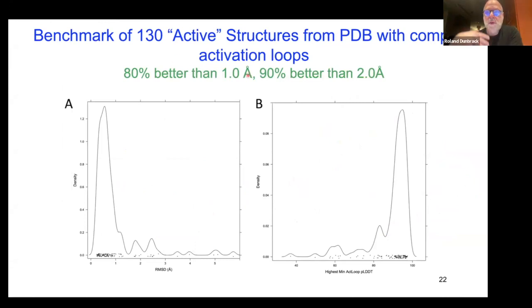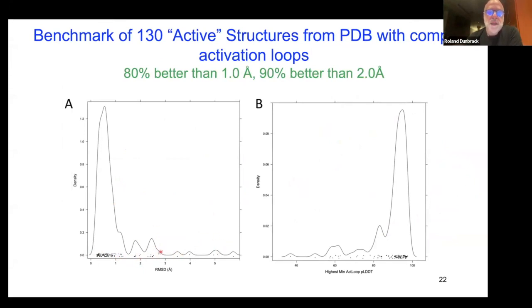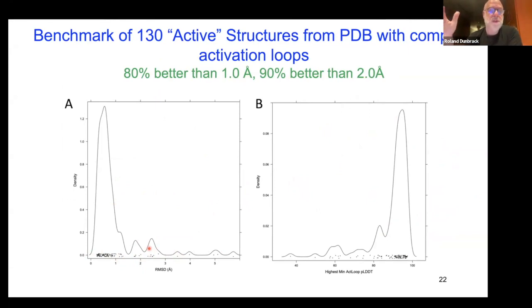Of the 130 kinases with complete activation loops in the PDB in active form, 80% of our AlphaFold models achieve better than 1 Å RMSD to the known structure. For a few outliers with higher RMSD, we believe the PDB structure itself may not be fully active — with parts of the activation loop still blocking the active site. Overall, we think most of our models are quite good.